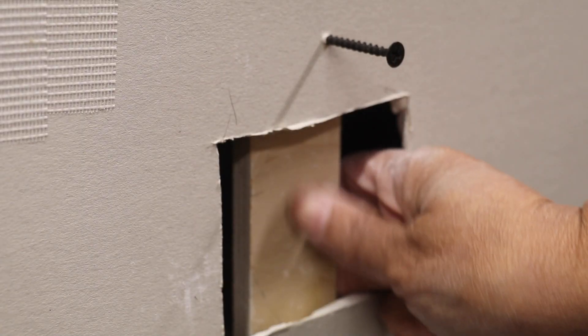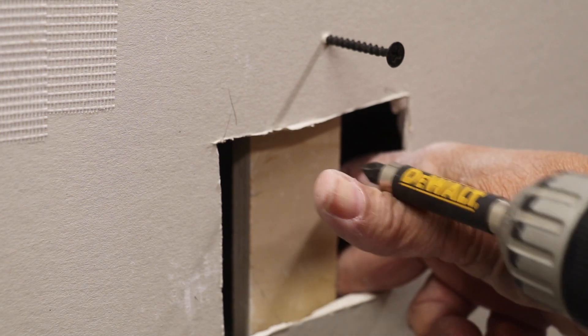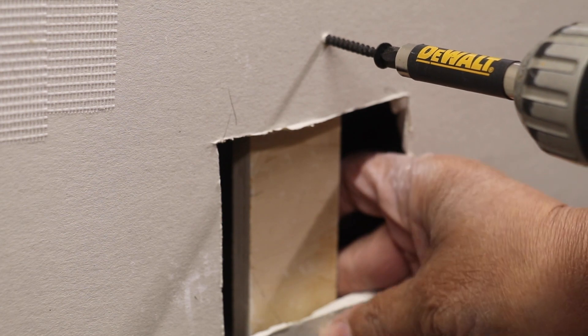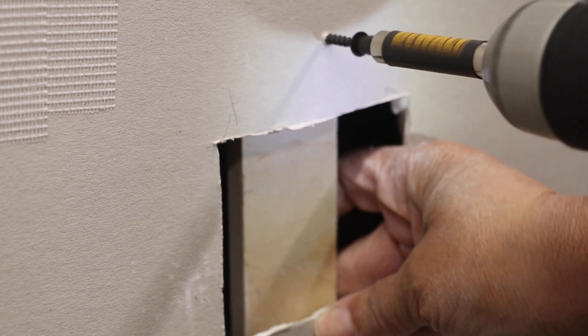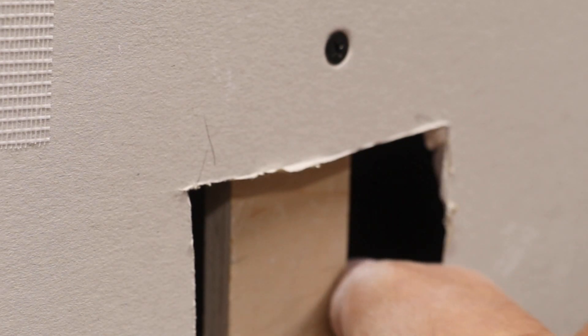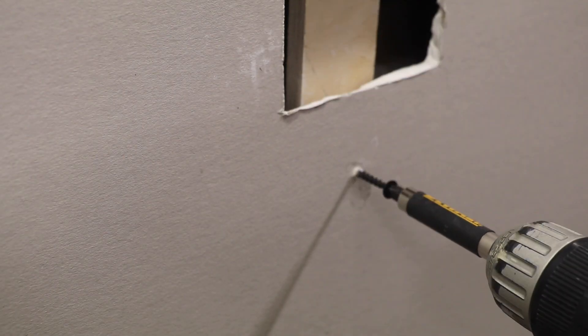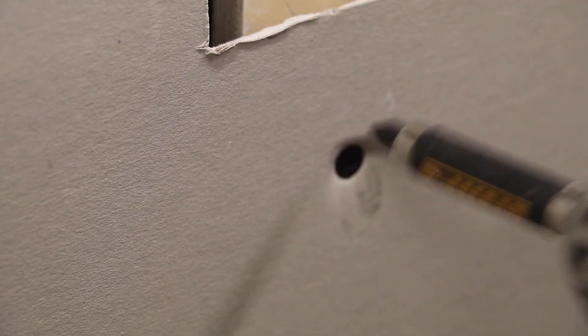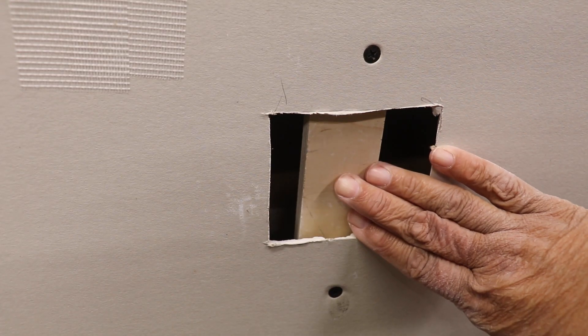Now once you have your plywood in place behind the drywall, you take a couple of drywall screws and secure the plywood in place. All right, our piece of plywood is securely in place.